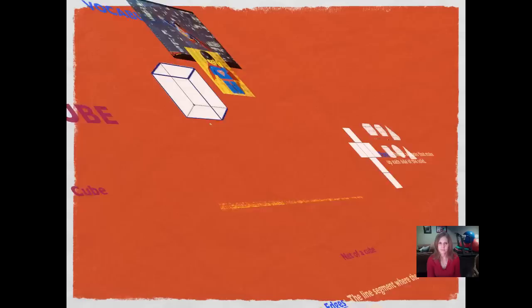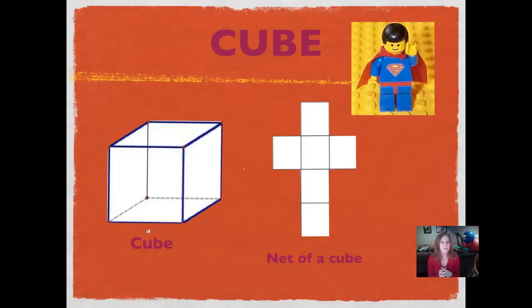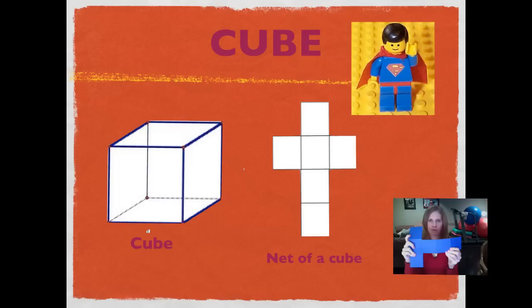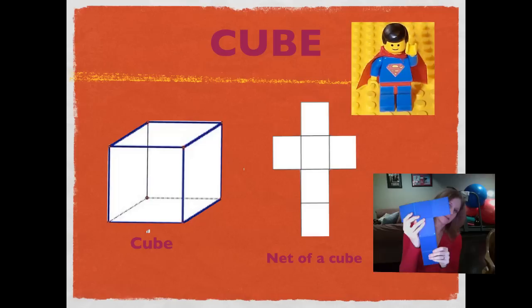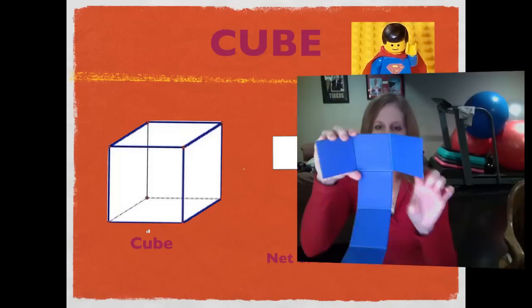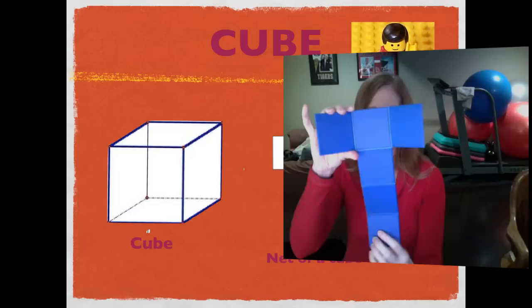We're going to start off with a cube. A cube is a solid figure where each of the edges are the same length, and all of the faces are the same size. When you open it up to see the net of the cube, I can unfold all of the pieces and get a figure that looks like this. As long as you have four faces going vertically, the other two could be anywhere — as long as you have one on each side of that vertical line of faces.